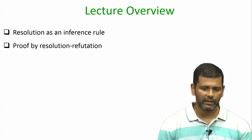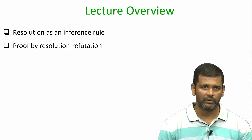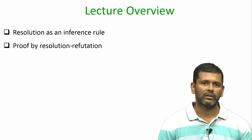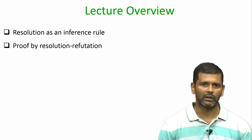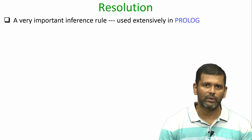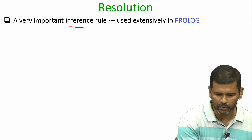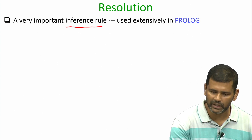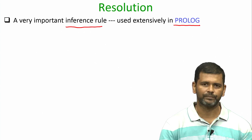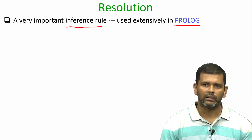The plan for this lecture is as follows: we will discuss about resolution, which is an important inference rule, and based on resolution we will see a proof strategy called proof by resolution refutation. To begin with, let us understand what exactly is the resolution rule. It is a very important inference rule used extensively in the programming language called Prolog, which is used in AI applications.